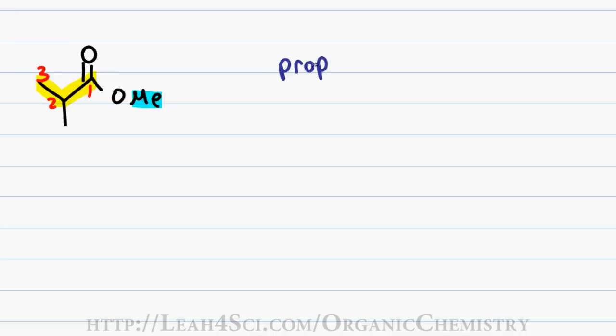3 carbons gives me a first name of prop, only single bonds gives me a last name of ANE. I have a methyl substituent on both the ester group and on the parent chain and I have to name them individually. The ME substituent gives me a prefix of methyl since it is not directly attached to the parent chain while the one carbon substituent on carbon 2 gives me the prefix of 2-methyl.